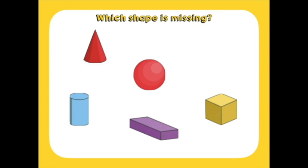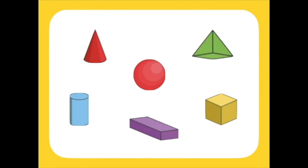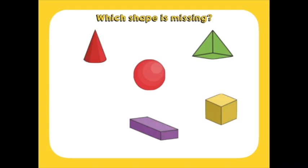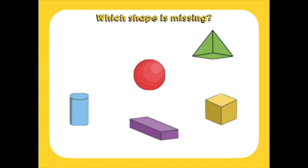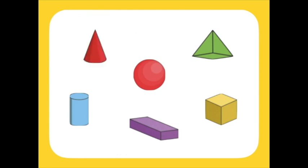Which 3D shape is missing? Pyramid. Do you know which one is missing? Cylinder. What's missing now? Cone.